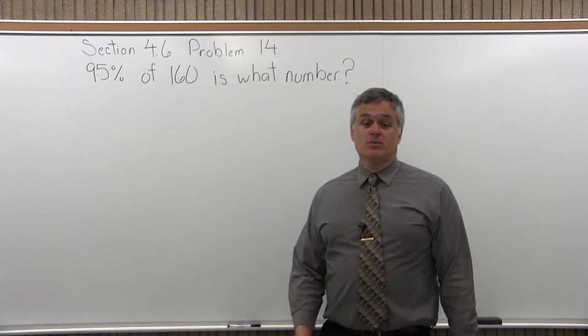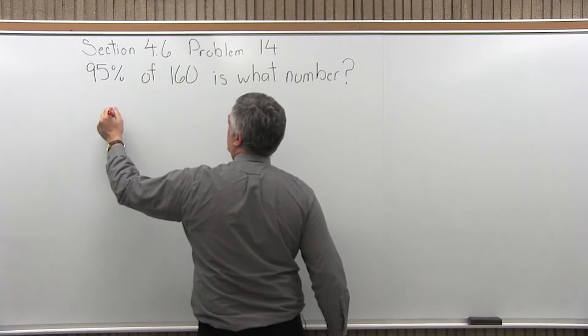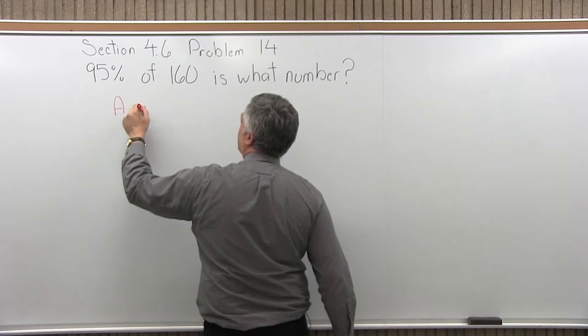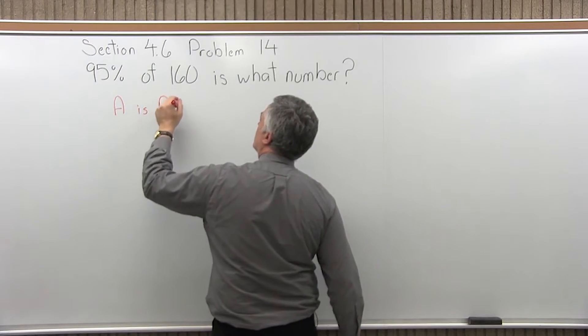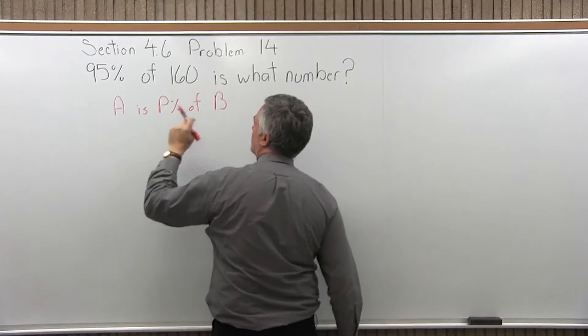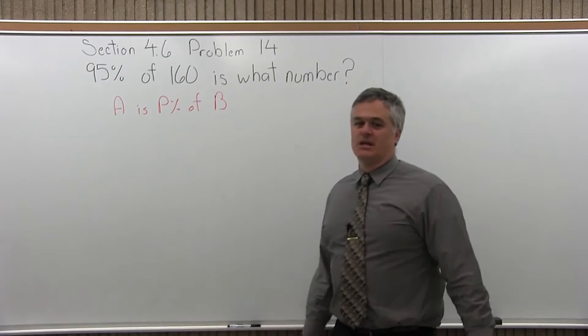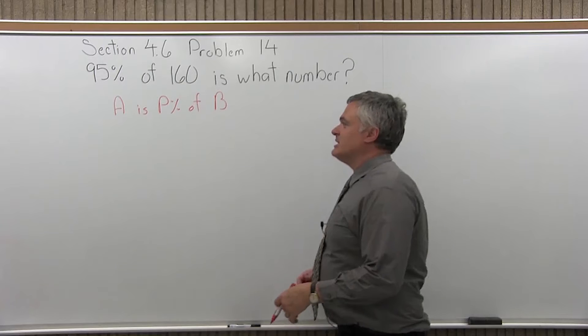So we want to solve this as a proportion, but to use my process for proportion, we have to rearrange this. The question has to be in the form A is P percent of B, and that's really not what we have. We want the percent of in the middle. The question starts with percent of in the beginning, so I have to rearrange it.